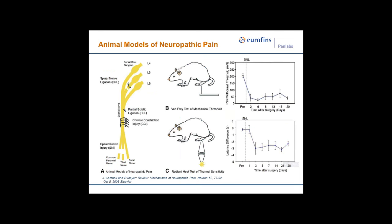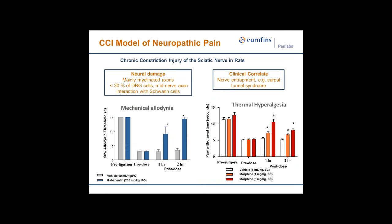Gary Bennett's model of chronic constriction injury uses loose ligatures around the sciatic nerve. This model produces neural damage mainly in myelinated axons, with probably less than a third of dorsal root ganglia cells being damaged, and involves mid-nerve axon interaction with Schwann cells. The clinical correlate is nerve entrapment such as carpal tunnel syndrome. In our lab, we measure mechanical allodynia reversed by gabapentin and thermal hyperalgesia reversed by morphine.